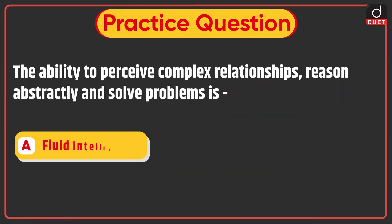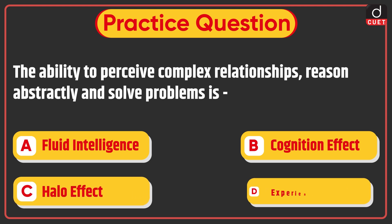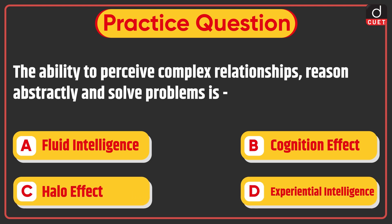Now it's time for the practice question: The ability to perceive complex relationships, reason abstractly, and solve problems is — Fluid intelligence, Cognition effect, Halo effect, or Experiential intelligence. Send the answer of this question in the comment section. Stay tuned for the next episode. Thanks for watching.